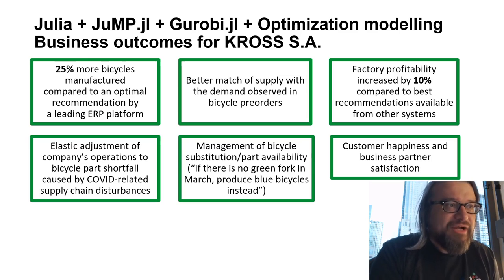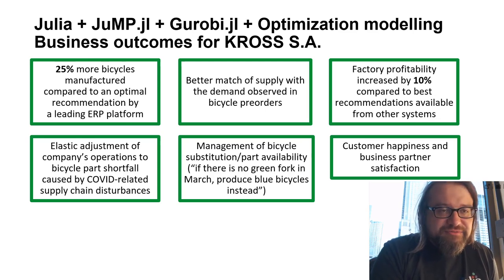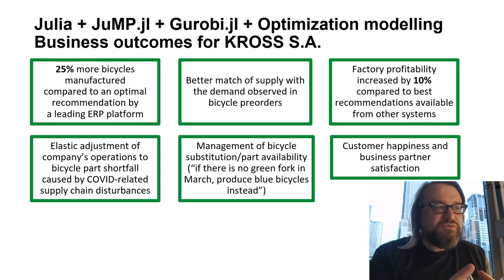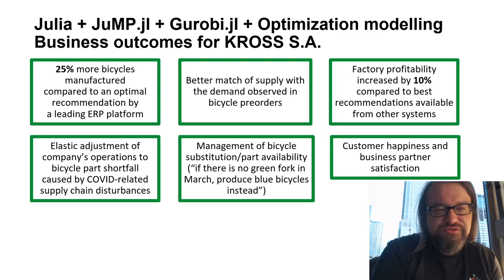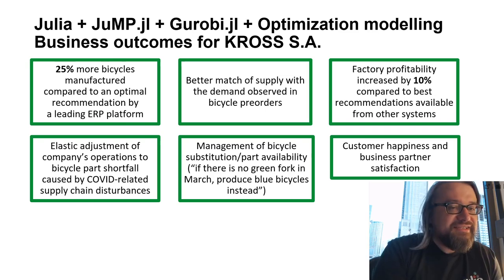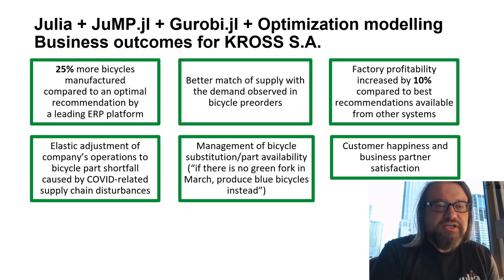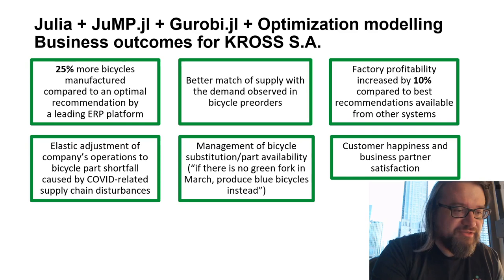What we did was construct a massive mathematical programming model using Julia, JuMP, and Gurobi.jl libraries. It turns out that building this Julia model led to a 25 percent increase in the manufacture of bicycles — allowing us to produce 25 percent more bikes — and increased the total profitability of the entire company by 10 percent, compared to a solution recommended by a leading ERP platform. This is a very significant impact on the business, and 10 percent is of course serious money.